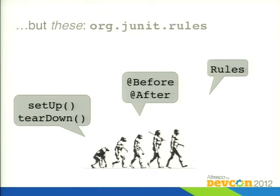JUnit rules are a feature that the JUnit framework has had since about version 4.6 or 4.7, and they're essentially an evolution of the setup and teardown methods that we all know.